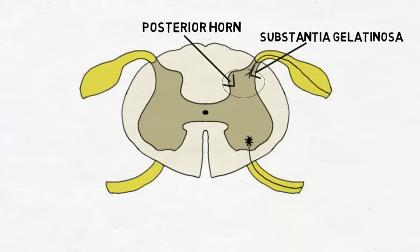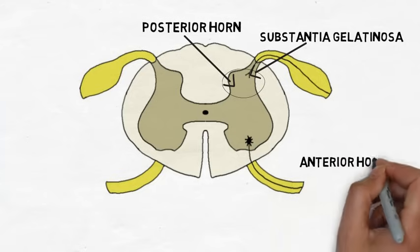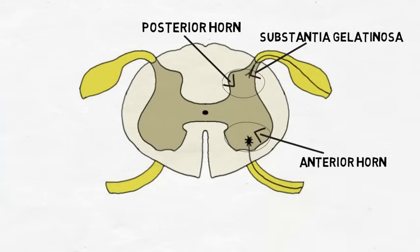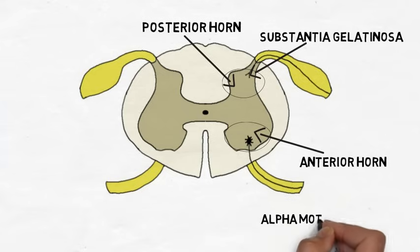The anterior horn contains the cell bodies of motor neurons that activate skeletal muscle. These neurons, called alpha motor neurons, leave the cord in the ventral roots and represent the way the nervous system enacts voluntary and involuntary movements.